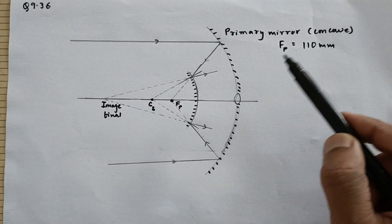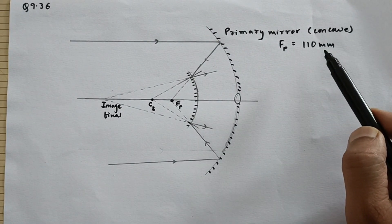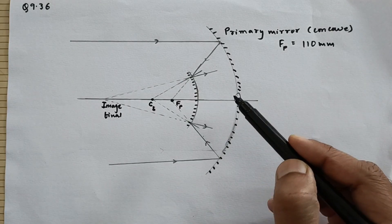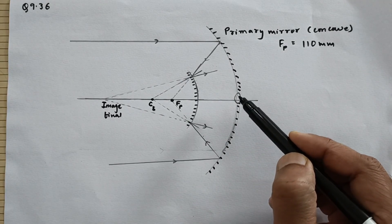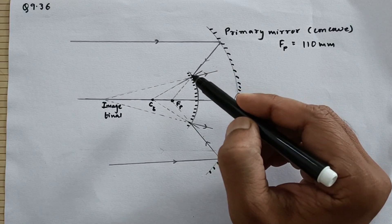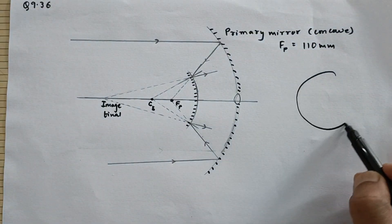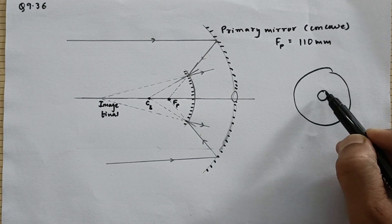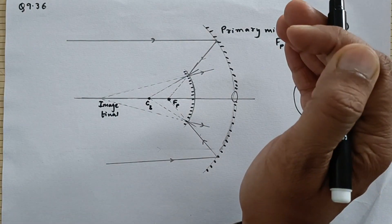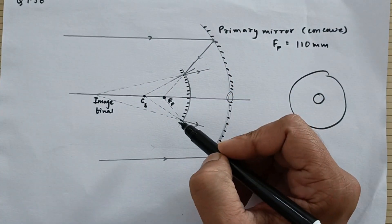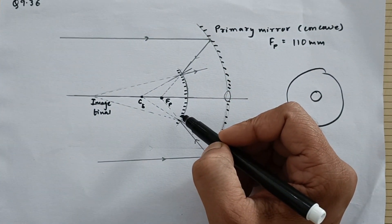So this is a primary mirror which is a concave mirror having focal length 110 mm. Then the center part of the mirror is cut like this and then you have the secondary mirror. So basically the primary mirror is like this and you are cutting it from the middle portion and then you are looking at the side view. So that is what it is.